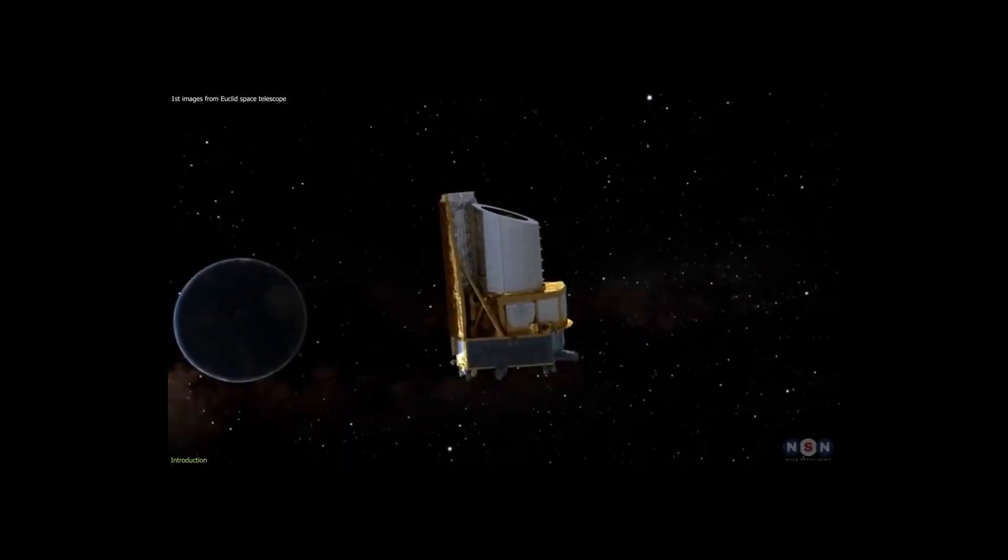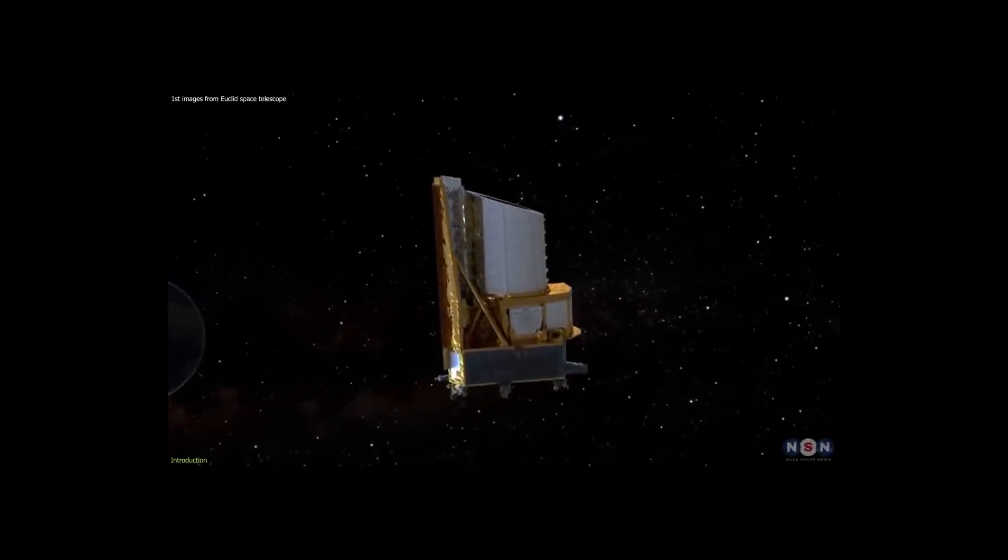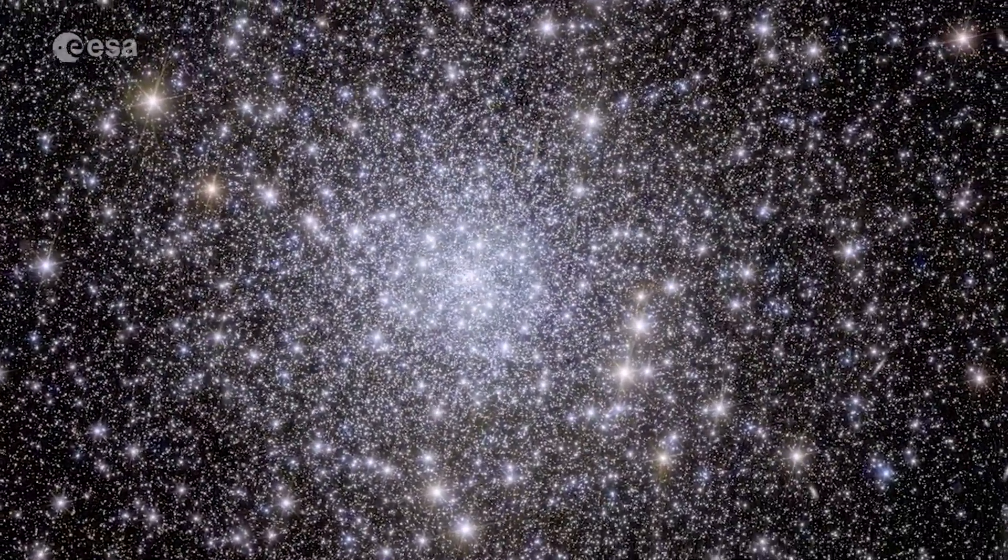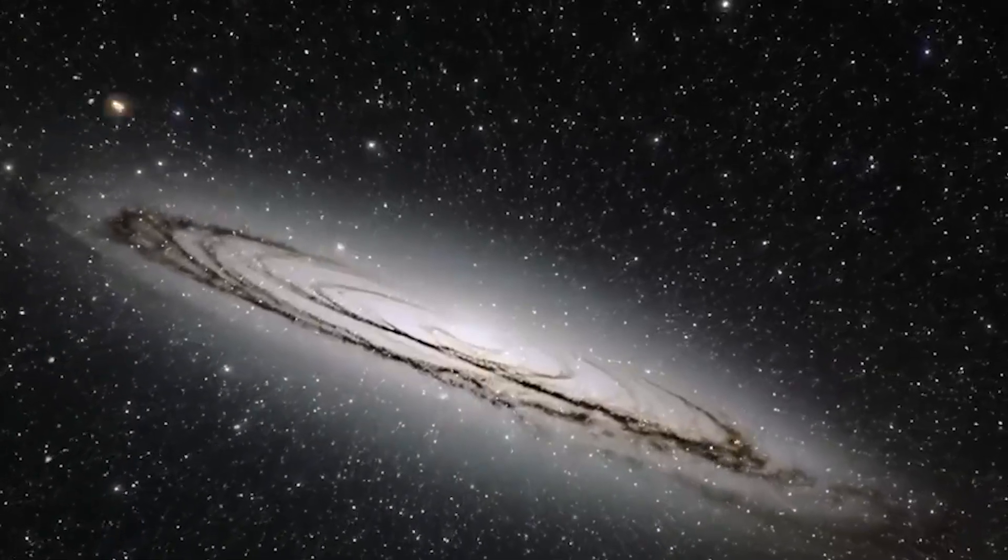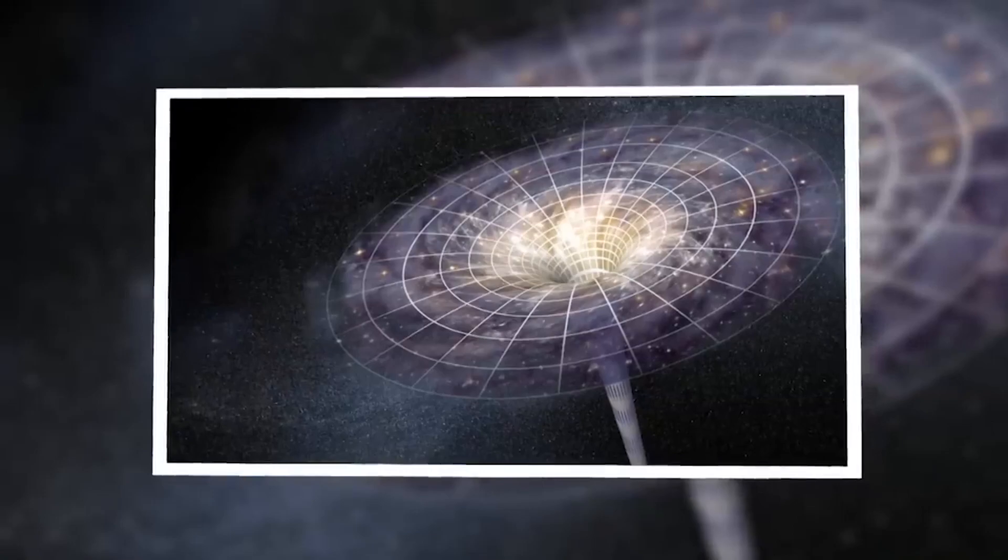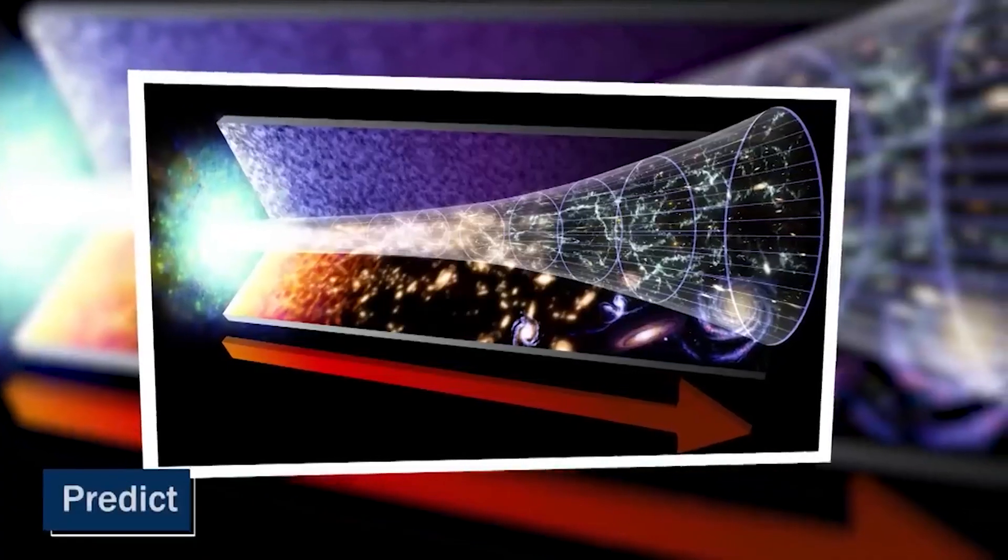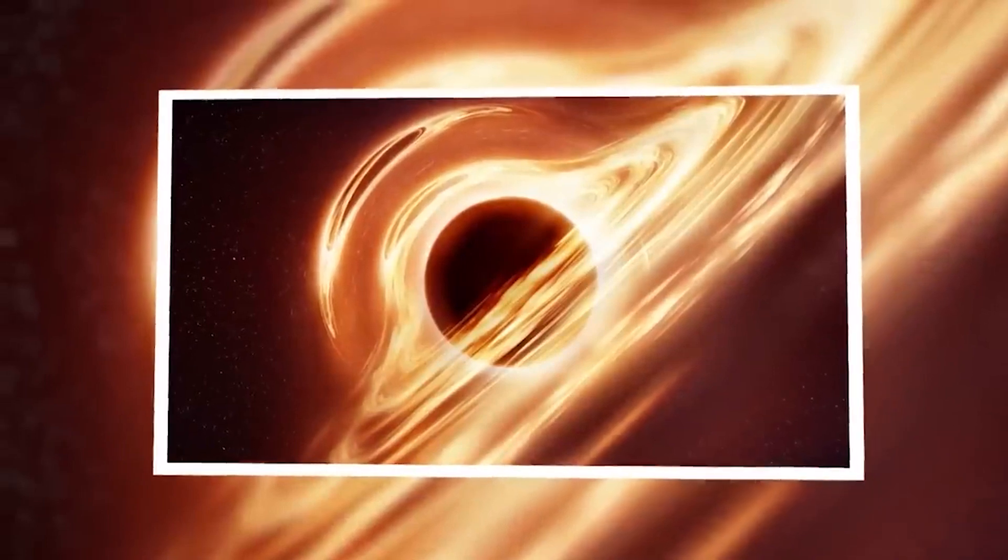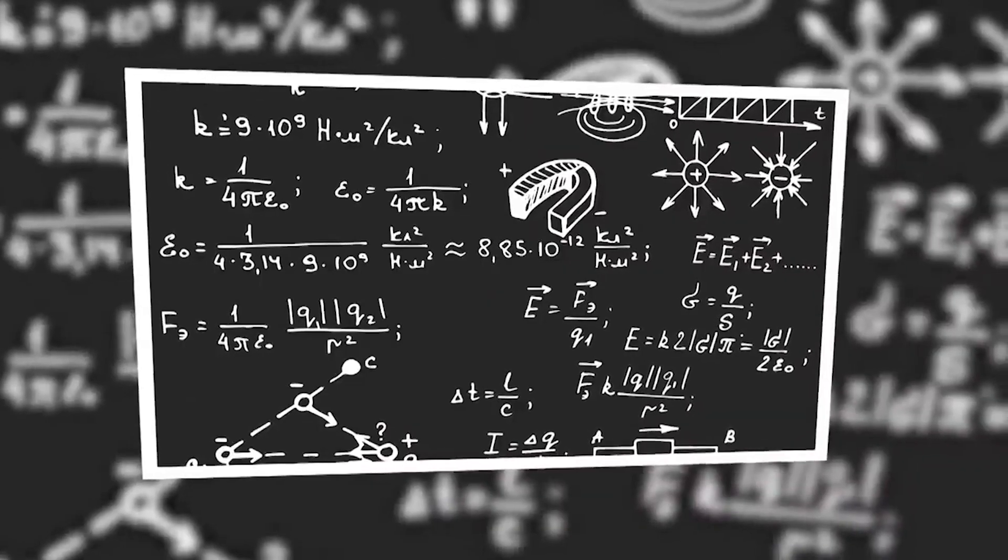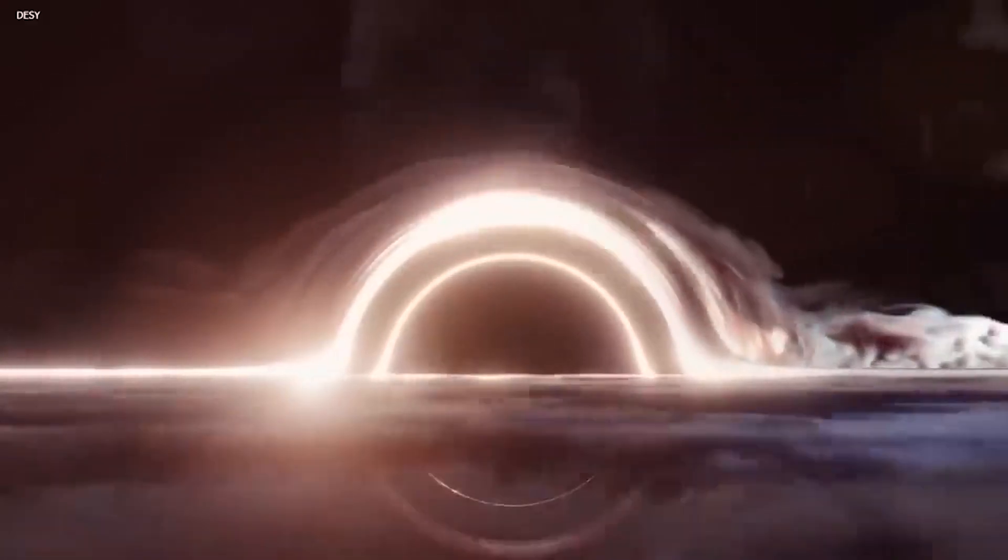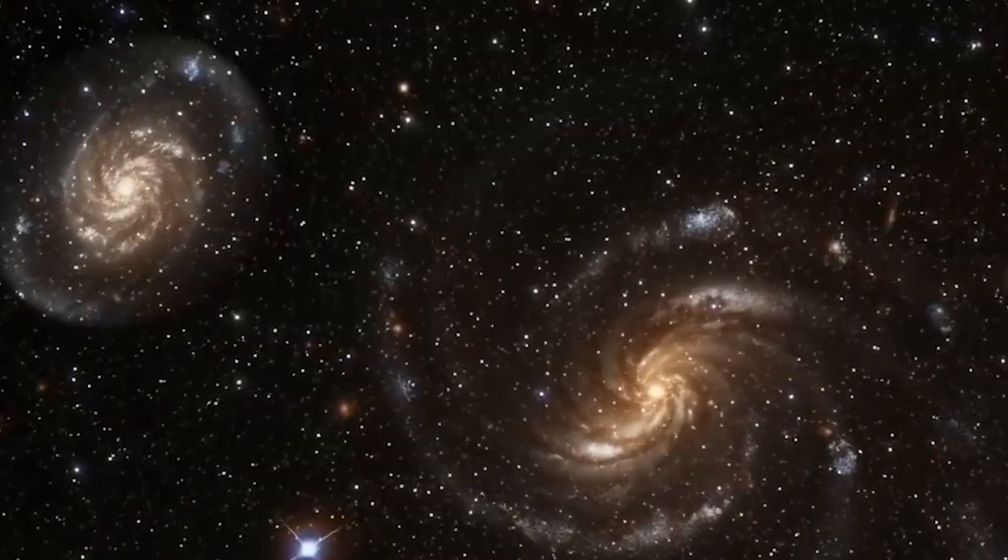The Perseus galaxy cluster has over 100,000 galaxies in it. The Hubble took over 16 years to capture many galaxies, whereas Euclid did it in just five hours. Euclid aims to observe billions of galaxies across a significant fraction of the observable universe, providing a comprehensive cosmic census and redefining our understanding of galactic structures and their cosmic ballet.